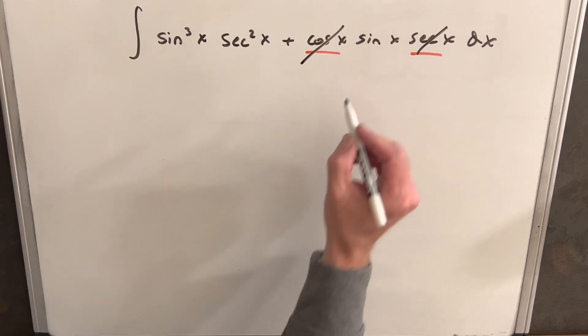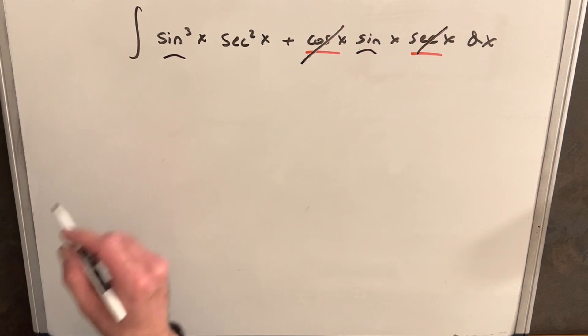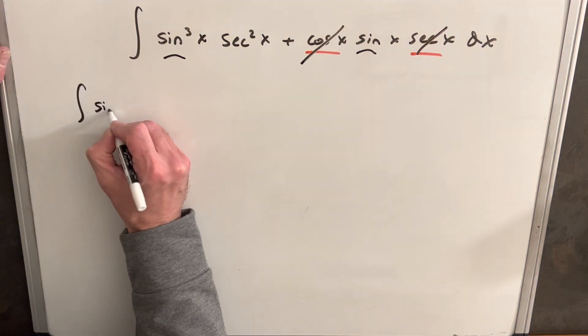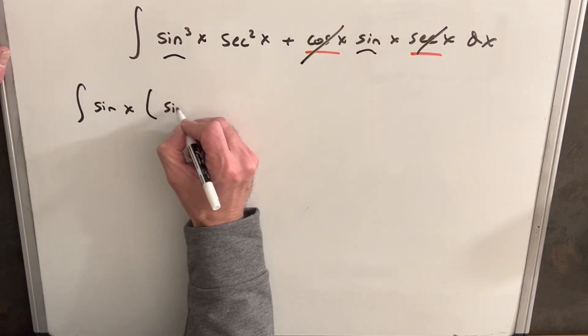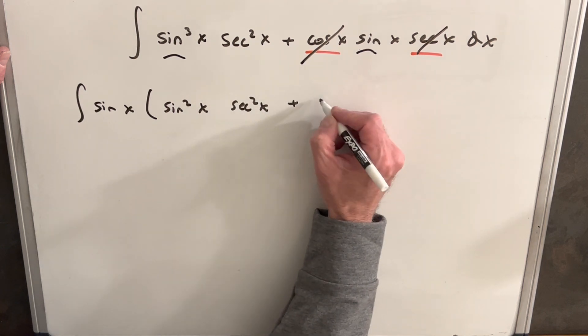Then from there I notice we're adding two expressions, but we have a sine in common, so we can factor that out. So we'll have the integral of sine x, sine squared x, secant squared x plus 1.